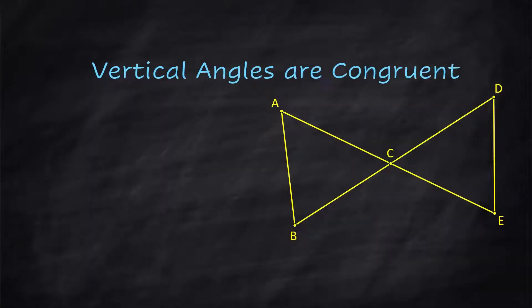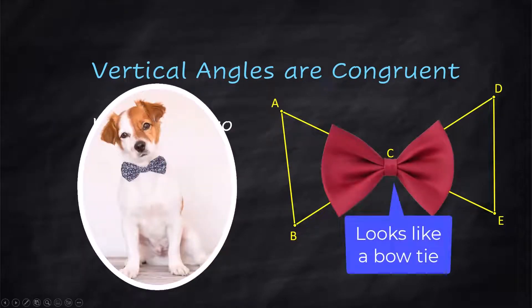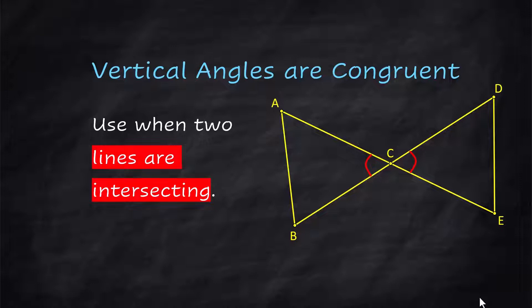Vertical angles are congruent. These are vertical angles. They're across from each other. So you look for this when you have two lines intersecting.